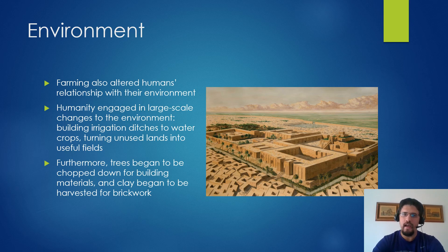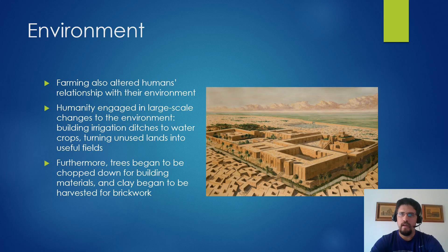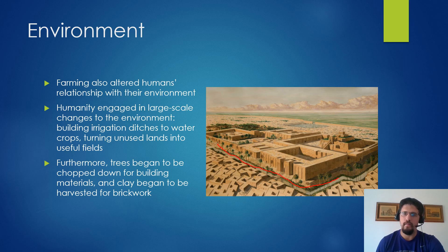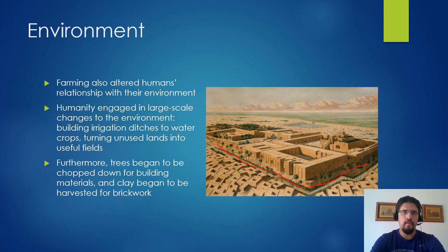Intentional environmental changes included building irrigation ditches, watering crops, cutting down trees for building materials and fuel using new tools, and using clay to create brickwork. We have a depiction here of a Mesopotamian city where pretty much everything is made of clay, minus a few palm fronds around the canal. Most average people would have been living in clay structures, while palm fronds would only have been seen in the homes of elites.